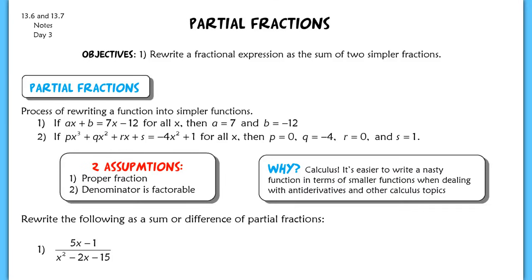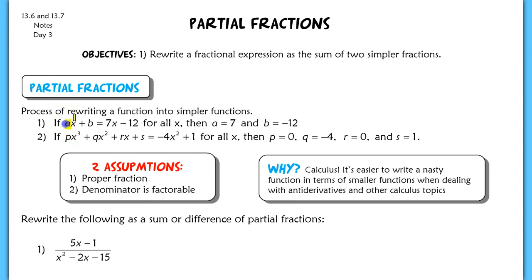The idea of what we're doing today rests on these two statements here. If ax plus b is equal to 7x minus 12, then for all x, a must equal 7 and b must equal negative 12. So this is just saying that the coefficients here must be equivalent.